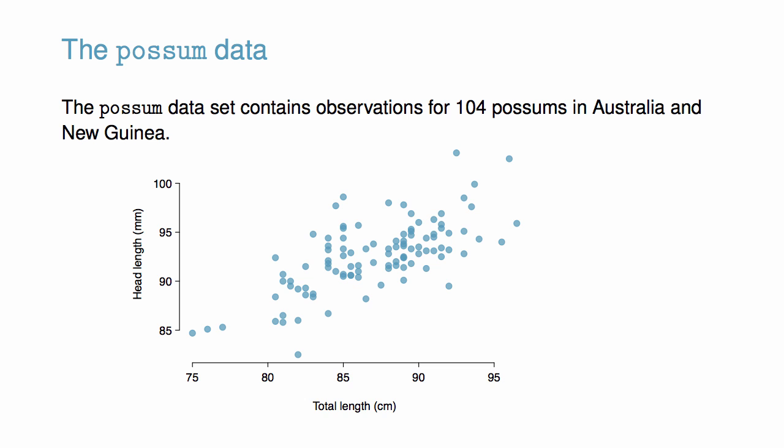The POSM dataset contains observations for 104 possums in Australia and New Guinea. Each point in the scatter plot relating head length and total length represents a single possum, and we can see the two variables are associated. Possums with an above average total length also tend to have above average head lengths. It could be helpful to partially explain the connection between these variables with a straight line.